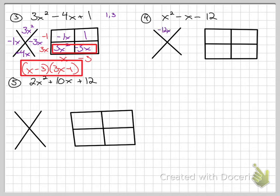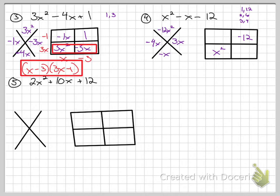For number 4: the top of the diamond is −12x² and the bottom is −x. Factors of 12: 1×12, 2×6, 3×4. Some combination needs to add to −x, so it must be 3 and 4 — specifically negative 4x and positive 3x. Multiplies to negative 12x² and adds to −x. The bottom row has only x in common: x times −4 = −4x, and x times 3 = 3x, leaving −4 and 3. The answer is (x − 4)(x + 3).